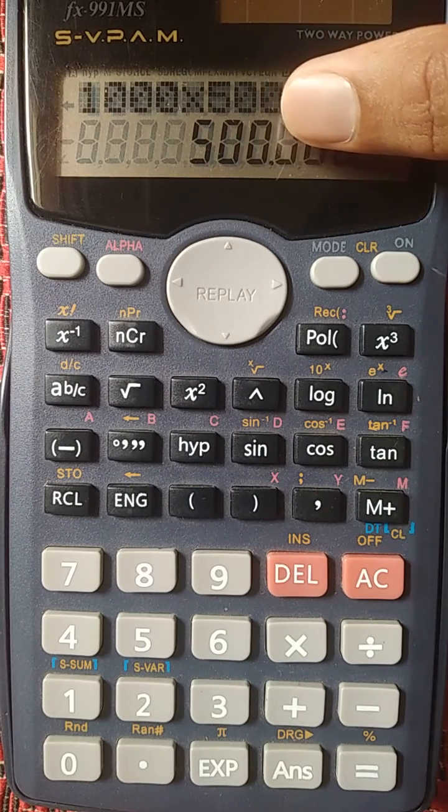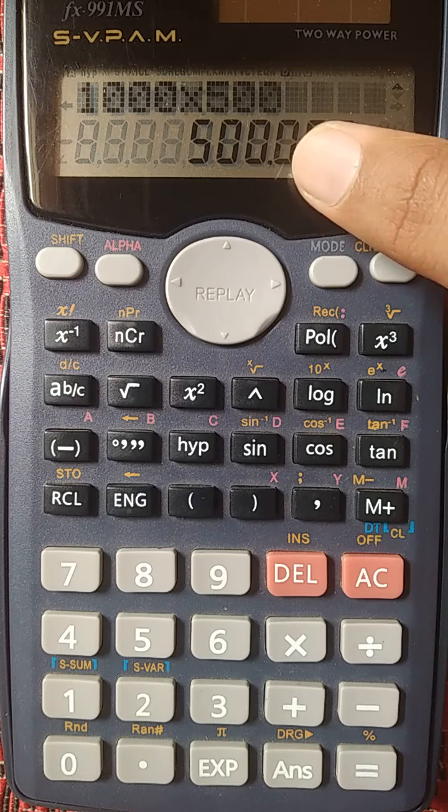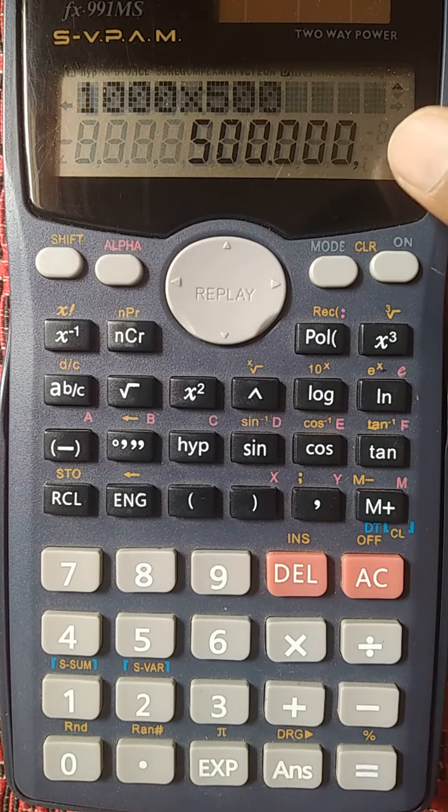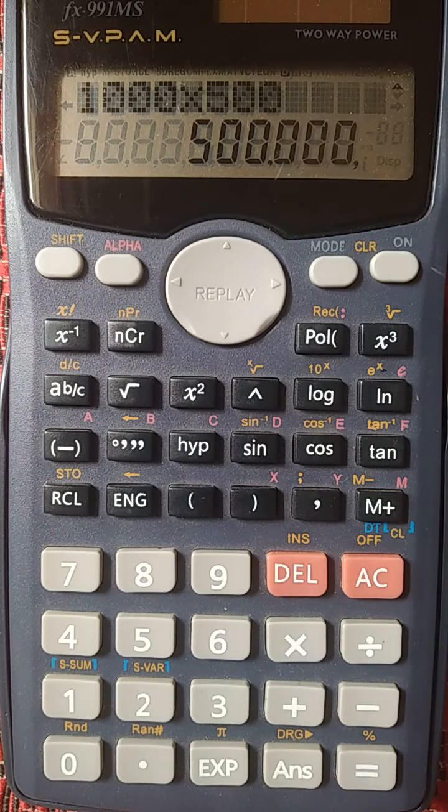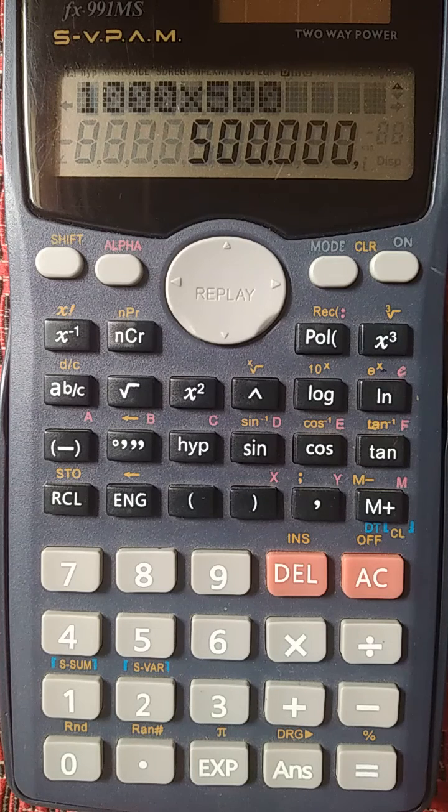So the comma has converted to dot and the dot has converted to comma. So this was the simple thing you can customize with your results and play with the scientific calculator.